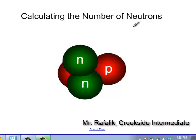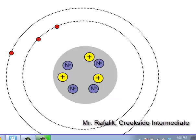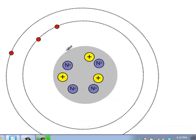In this session we're going to focus on how to calculate the number of neutrons in an atom. Let's begin by reviewing what we know about an atom. In the center of an atom we have the area known as the nucleus.